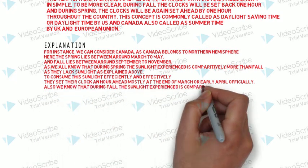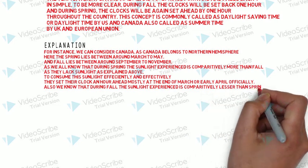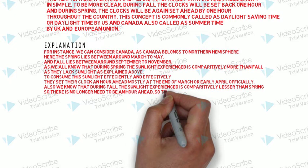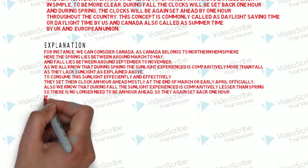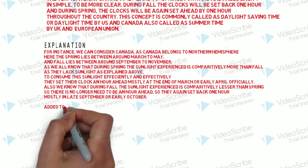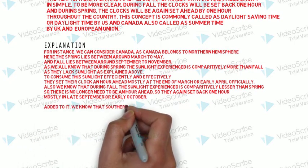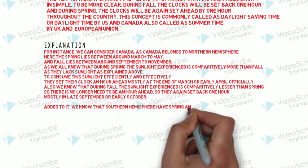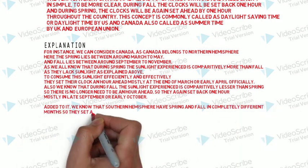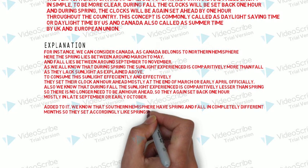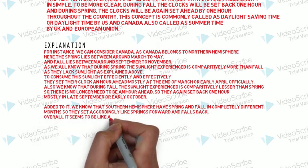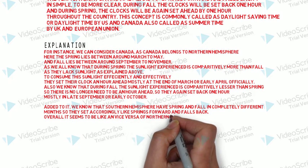During fall, the sunlight experienced is comparatively lesser than spring, so there is no longer a need to be an hour ahead. They set their clocks back by one hour, mostly in late September or early October. Additionally, the southern hemisphere has spring and fall in completely different months, so they set their clocks accordingly — spring forward and fall back — which is overall the reverse of the northern hemisphere.